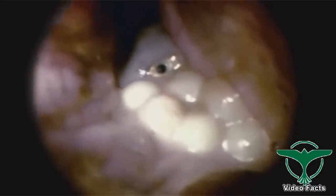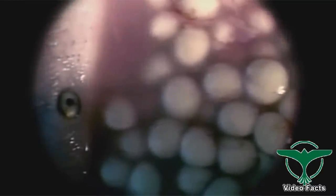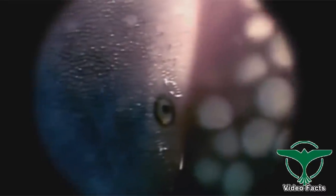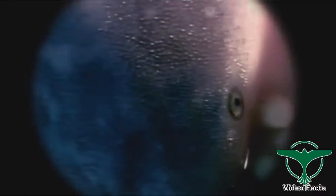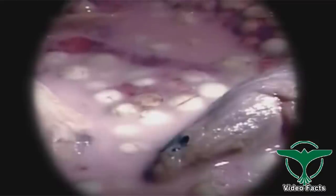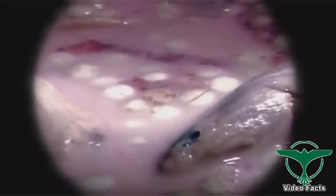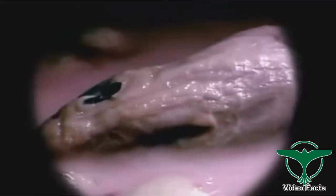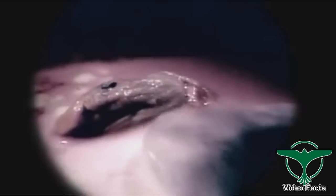This is footage from an actual sand tiger womb. The mother continues to produce unfertilized eggs for her maturing embryo to eat. It continues to grow in this eggy soup, swallowing up the yolks along with the bodies of its less fortunate siblings.